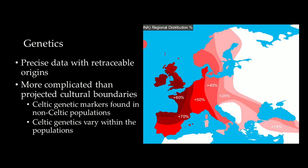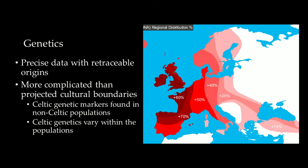A third option would be to look at genetics — it is precise data with retraceable origins. But the evidence that we have of Celtic genetics is more complicated than the projected cultural boundaries. We can find Celtic genetic markers in non-Celtic populations such as Italy, Germany, Scandinavia, and the weirdest one, the Basque country, since they don't even speak an Indo-European language. Celtic genetics can also vary within populations; for example, a study has shown that the Welsh people of today have much more genetic variation than the English people of today.